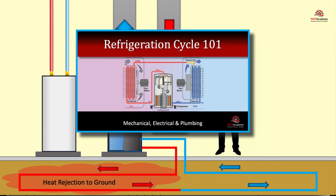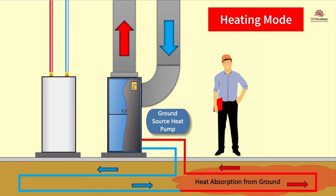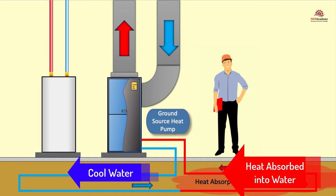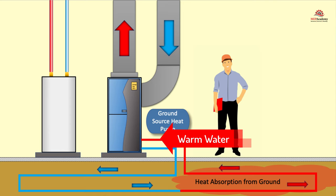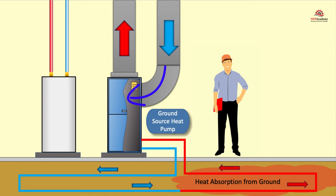In heating mode, the opposite occurs. We will always follow the heat as stated by the second law of thermodynamics. The heat in this case is provided by the ground. The cool water is circulated to the ground where it absorbs heat from the ground. This warm water then circulates into the ground source heat pump where it is absorbed into the refrigerant, causing the liquid refrigerant to boil and turn into a vapor. The hot refrigerant is then circulated to the indoor coil where it comes in contact with the cooler return air from the space. The cool return air absorbs the heat from the hot refrigerant and heats the leaving supply air.